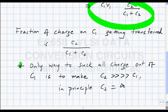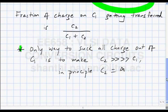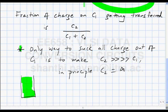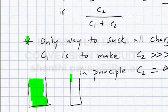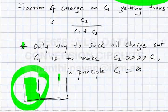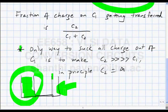In the bucket analogy, connecting two buckets with a pipe at the bottom causes water to flow until it reaches the same level in both. The only way to drain out all the water from the first bucket is when the second bucket is the ocean — for any finite bucket you cannot drain it completely.